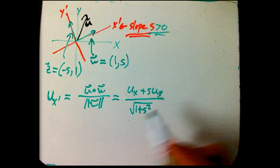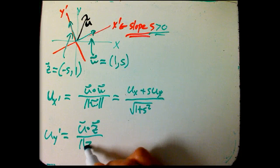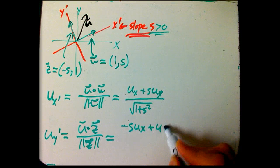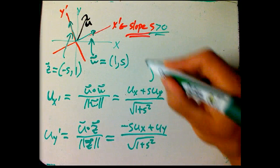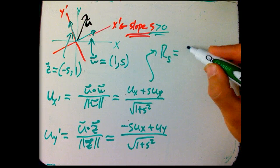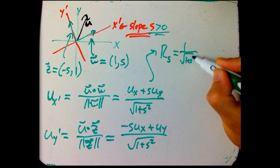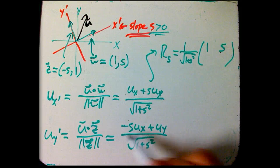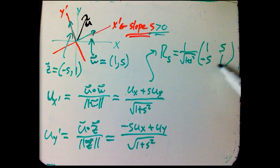That's definitely a less pretty formula. And then UY prime is U dot Z over magnitude of Z, which is minus S UX plus UY over, this has the same magnitude, square root of 1 plus S squared. So the rotation matrix, expressed as a function of slope S, is going to be, it's got an overall factor of 1 over root 1 plus S squared.